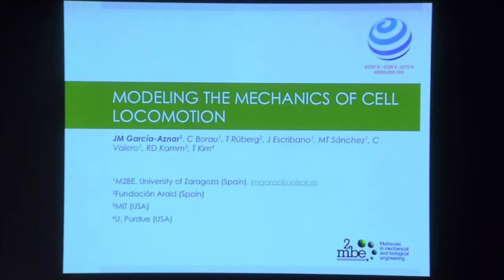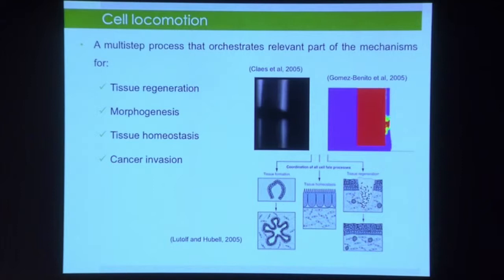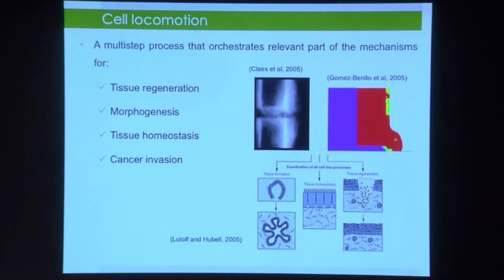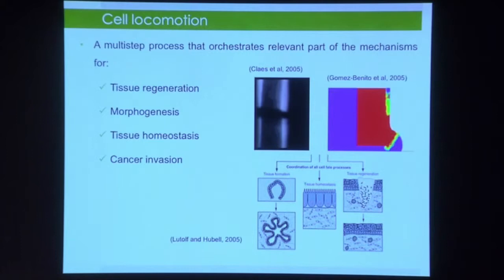Thank you very much. It's a pleasure to do this presentation. I would like to remark that cell migration is a relevant phenomenon that regulates most mechanisms in tissue regeneration, tissue morphogenesis, and cancer invasion. For example, when we have a small wound, our body is able to repair it because cells are able to reach the injured area. However, when we have a large wound, our cells are not able to reach the injured area.